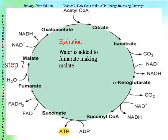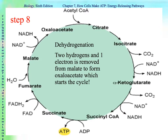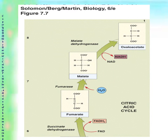In step seven, hydration — water is just added to fumarate to make malate. We are still at a four-carbon molecule. The last step is malate being turned into oxaloacetate through dehydrogenation: two hydrogens and one electron are removed from malate, forming oxaloacetate, our four-carbon molecule, which will then be reused in the cycle. Here's the chemistry: there's fumarate, water is added to make malate, then dehydrogenation to make oxaloacetate.